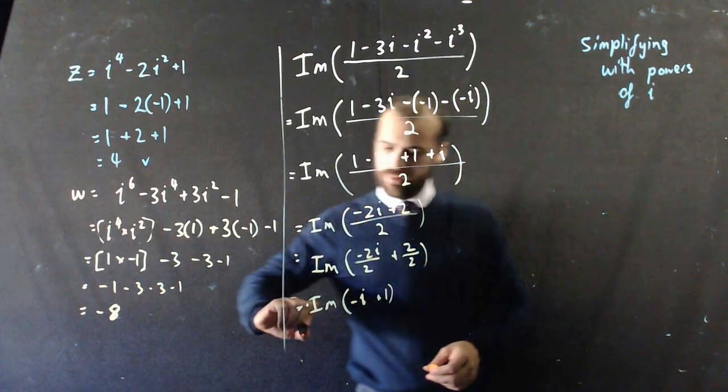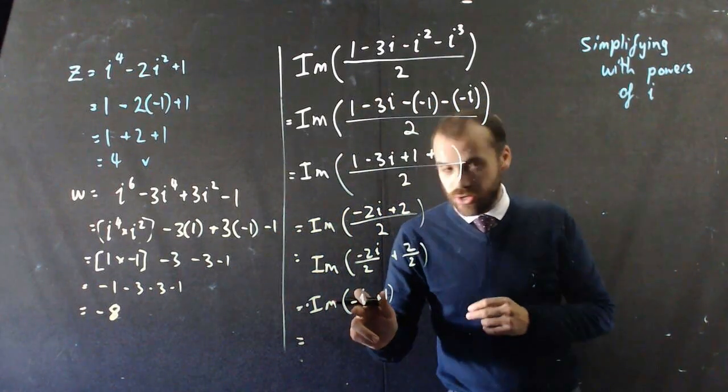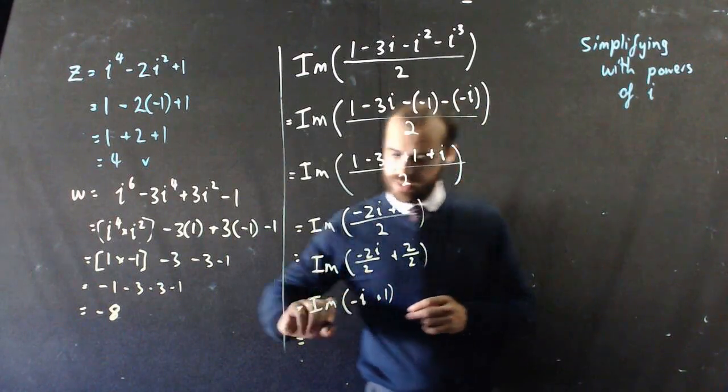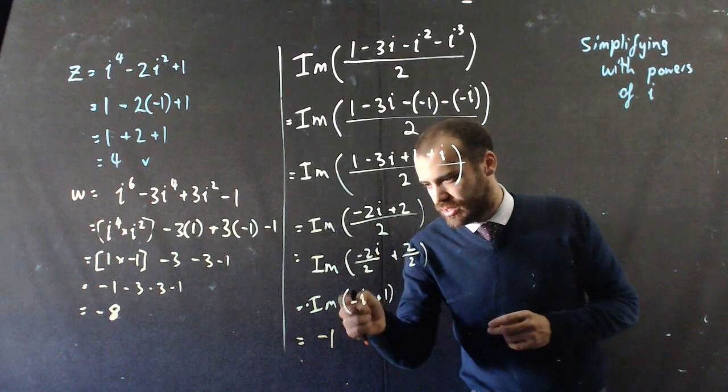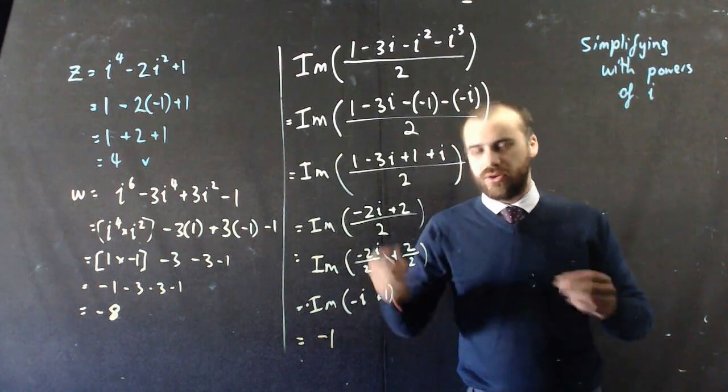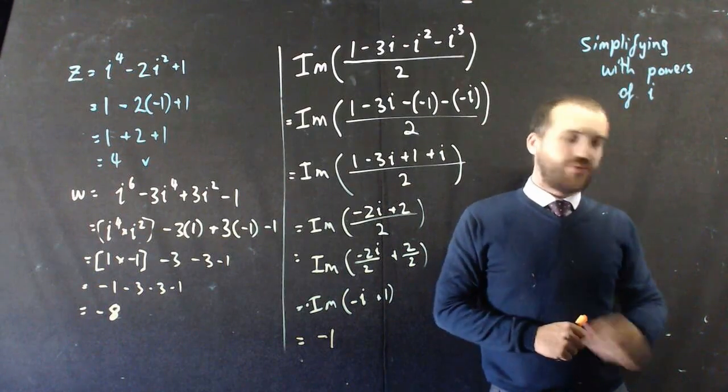I only want the imaginary component. Careful, the imaginary component is not negative i, it's negative 1. It's just the coefficient of i, not i itself. Alright, there's a little bit of fun simplifying with powers of i. Thank you.